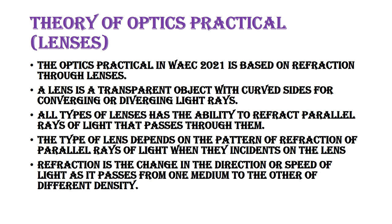All types of lenses have the ability to refract parallel rays of light that pass through them. Parallel rays of light incident on the lens are either being converged or diverged. To converge means to gather and focus light to a particular point. To diverge means to scatter it — to make rays move in different directions.